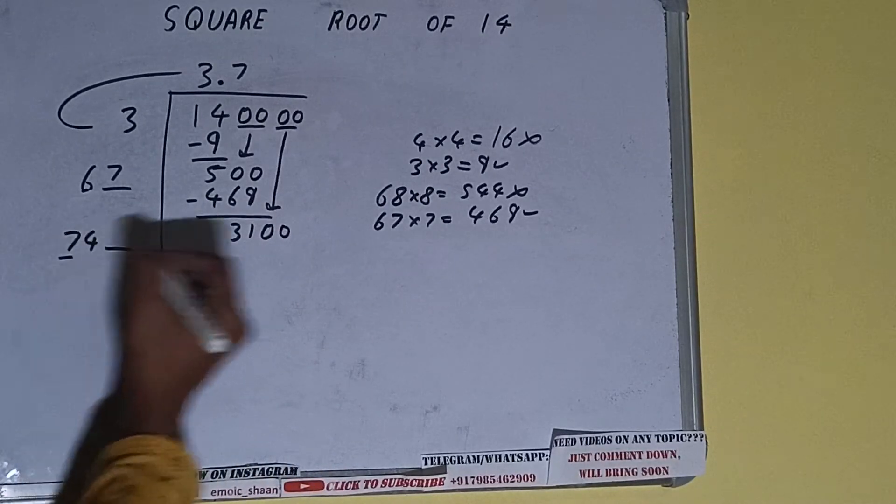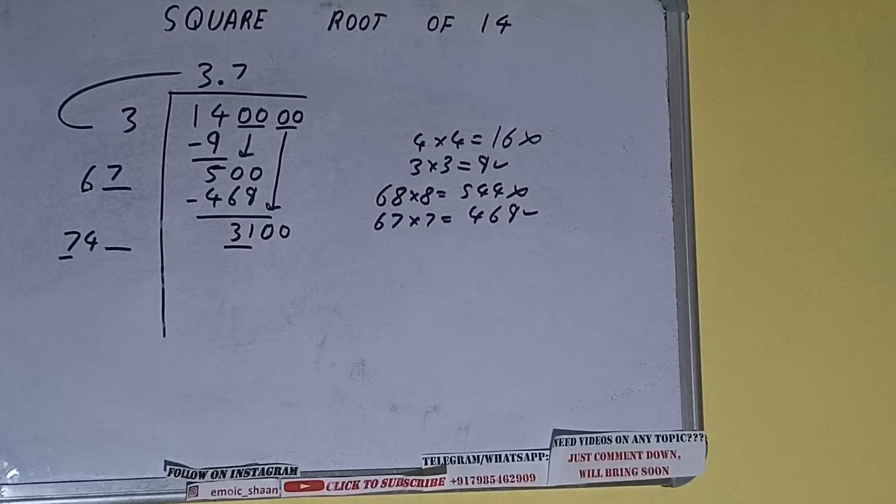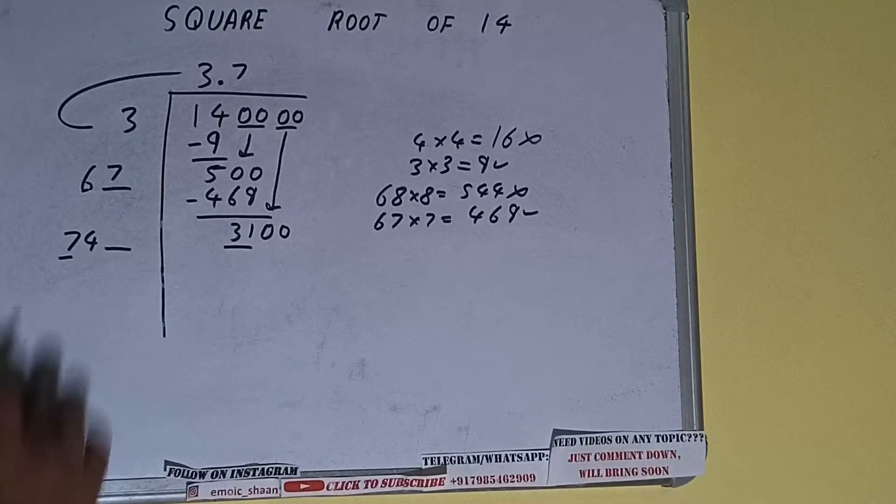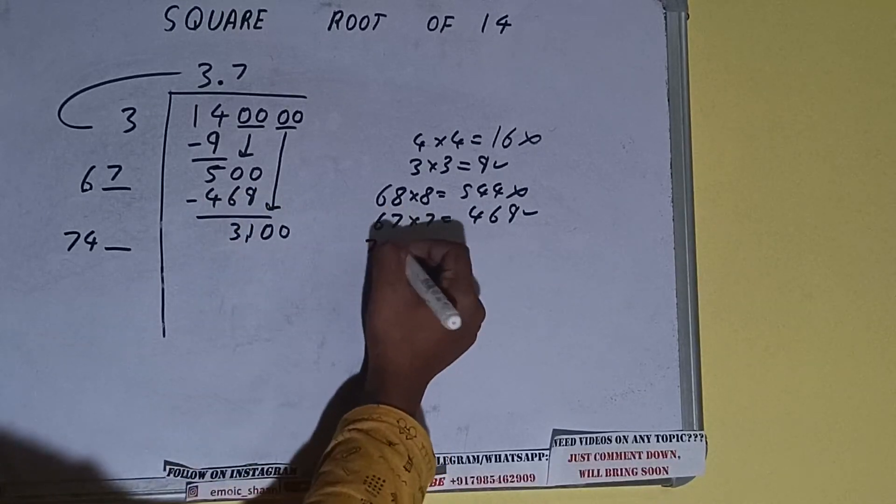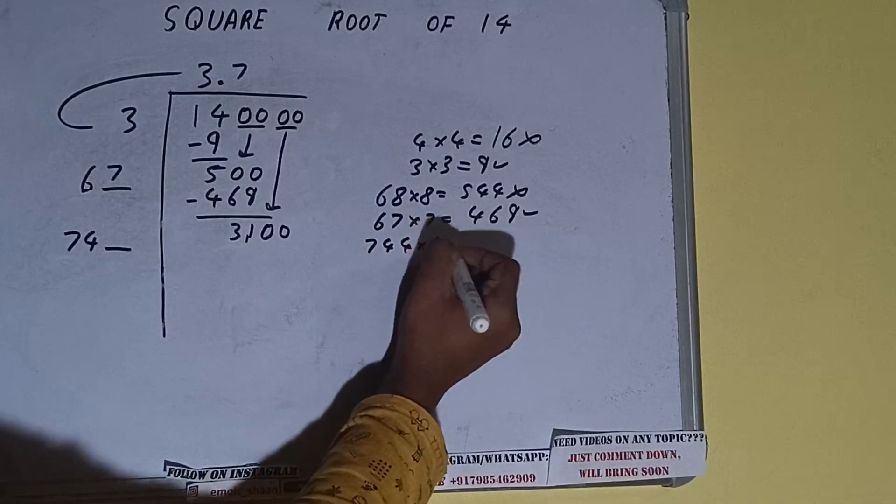Now compare this 7 with this 31. So 7 times 4 is 28, right? So we can try 4 times. 744 into 4 we can try.